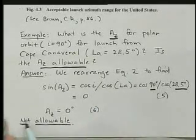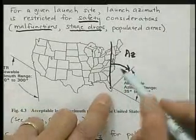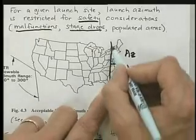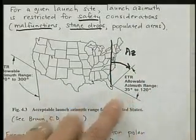By this calculation this is not allowable because an angle of zero for az would be straight north, and that would fly over populated areas. It's outside this range of thirty five degrees to one twenty.